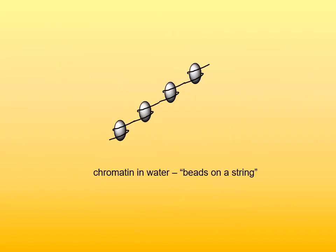Here is what chromatin looks like in water. If chromatin is allowed to swell in water and viewed by means of electron microscope, nucleosomes appear as beads on a string. Individual nucleosomes are connected by short strands of 40 to 60 base pairs of double-stranded DNA.